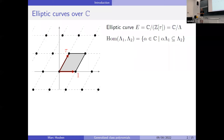If I define a morphism of lattices to be a complex number that multiplies one lattice into the other, then you can really make this into an equivalence of categories between lattices on the one hand and elliptic curves on the other hand.